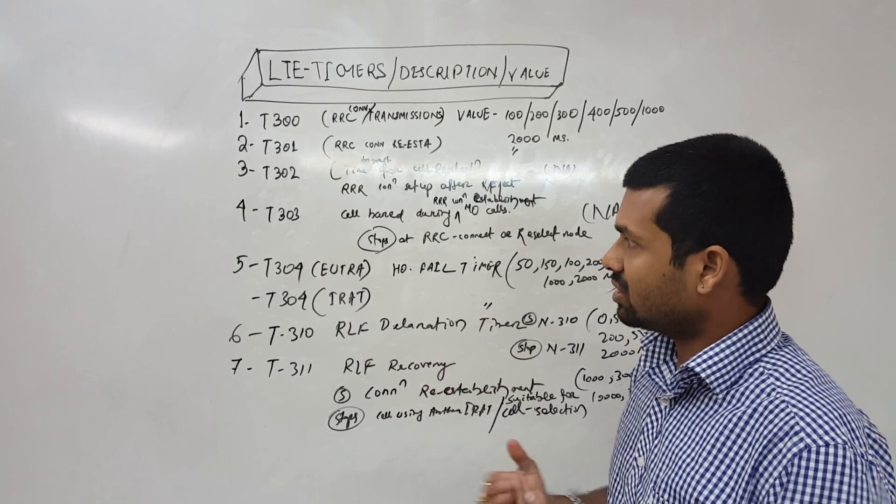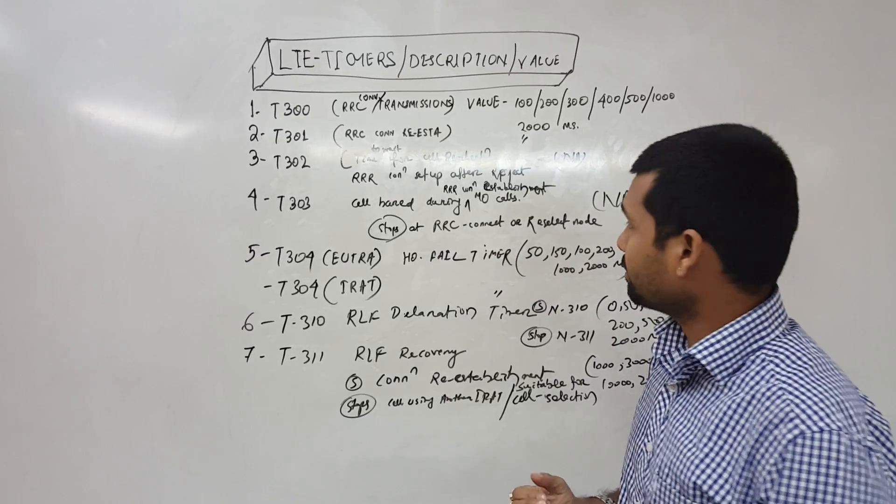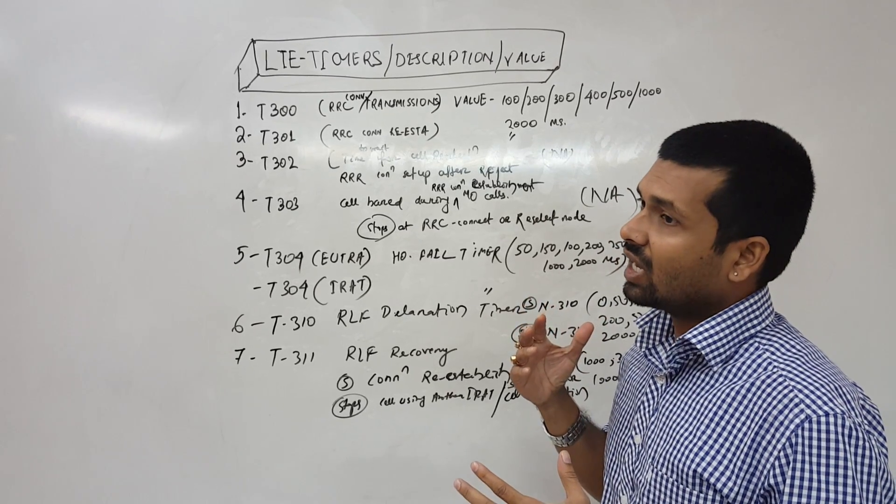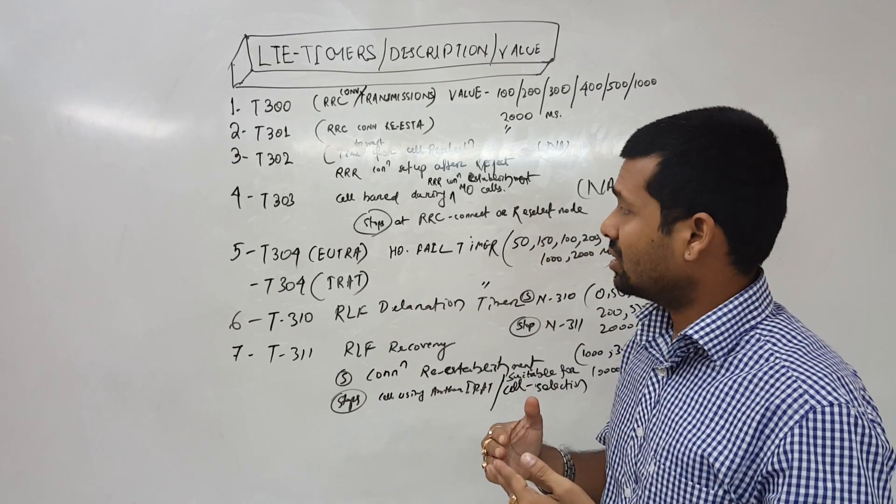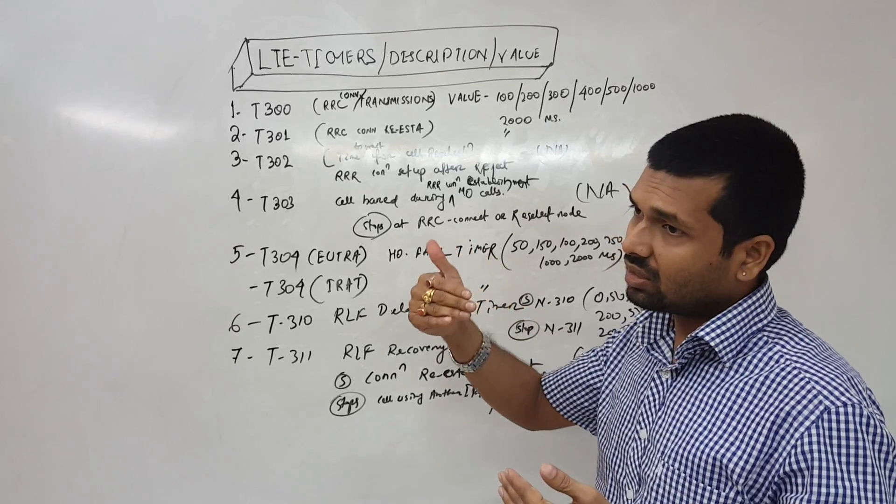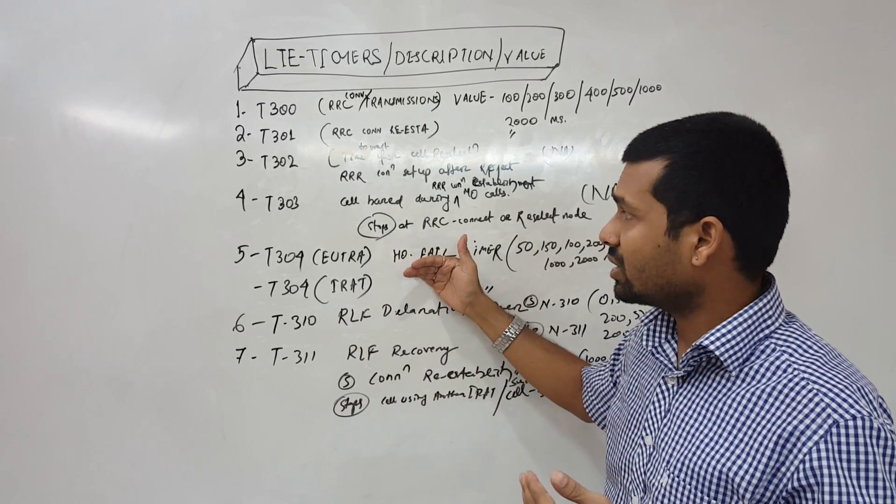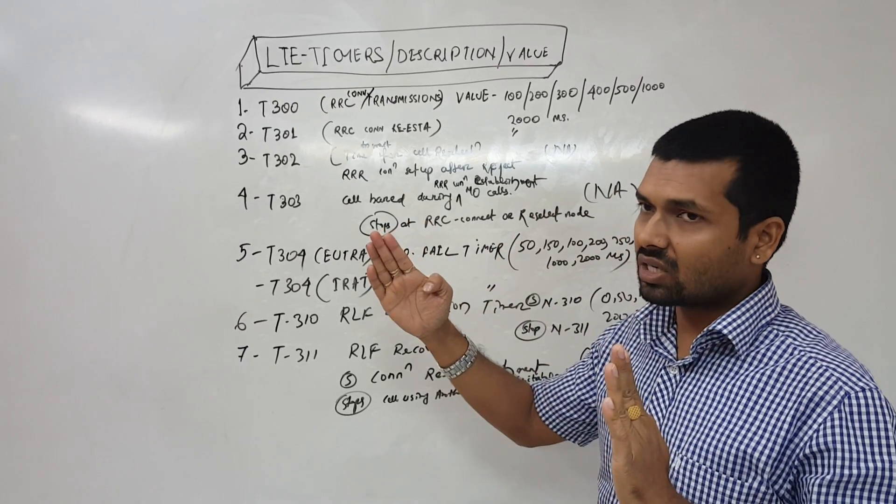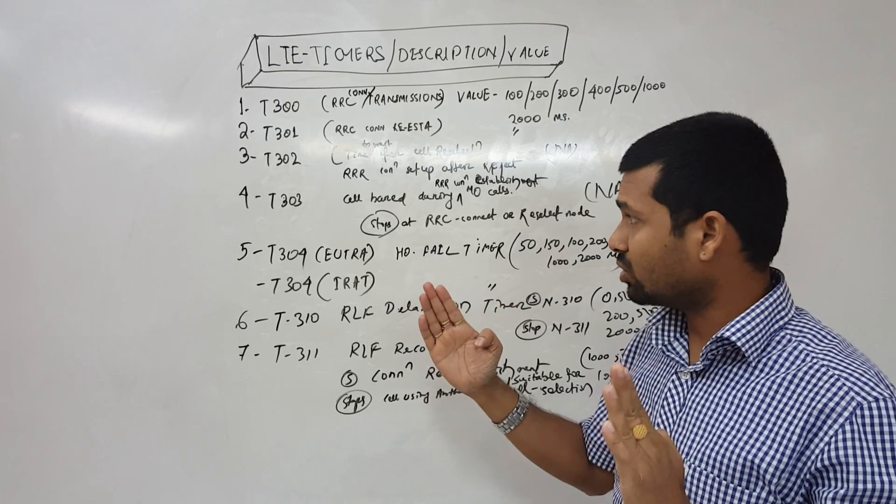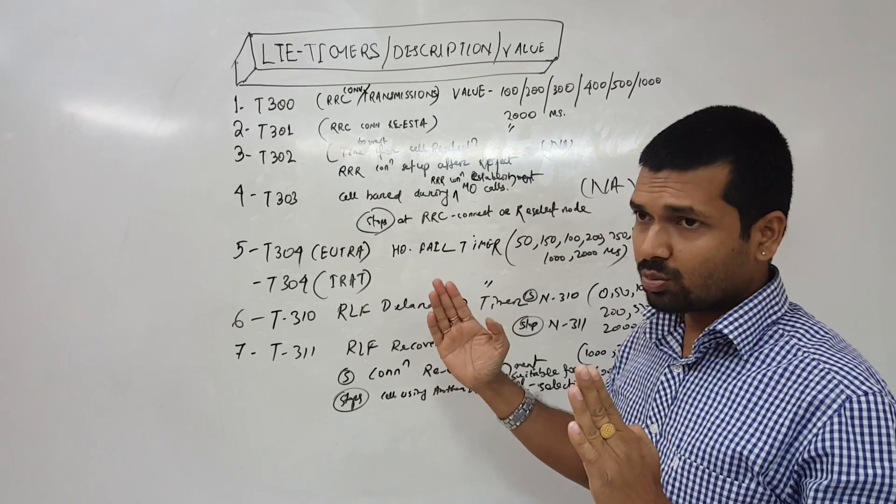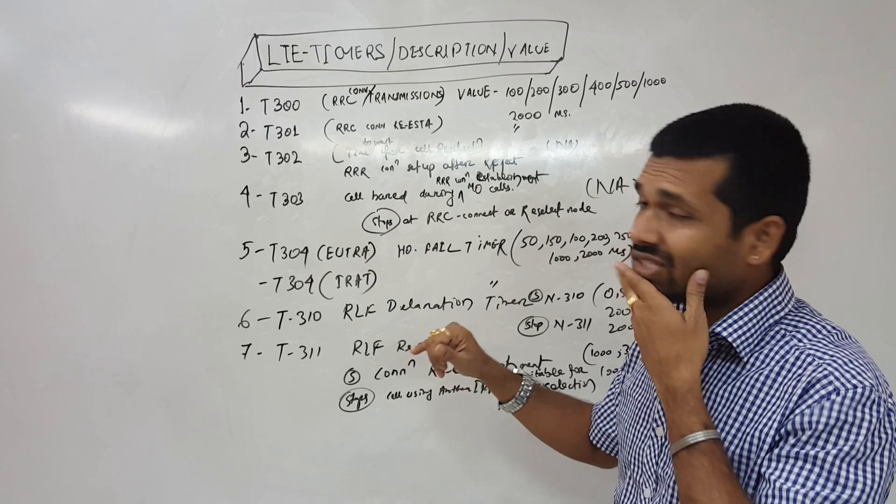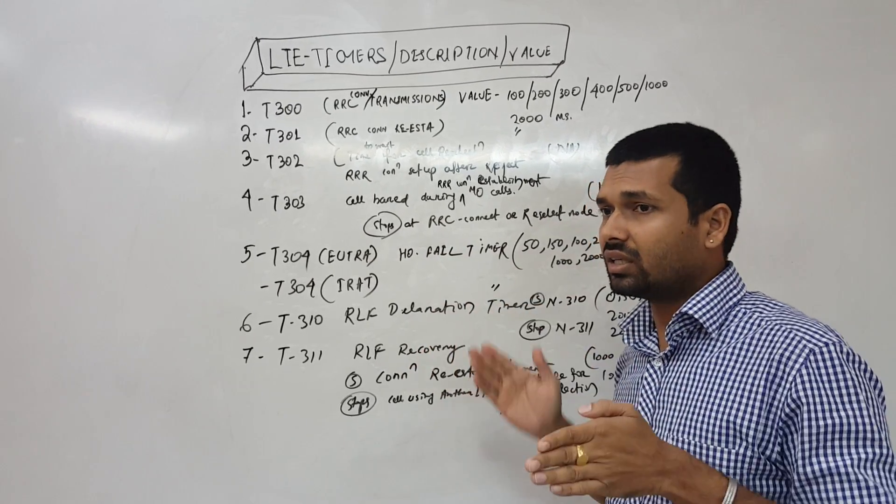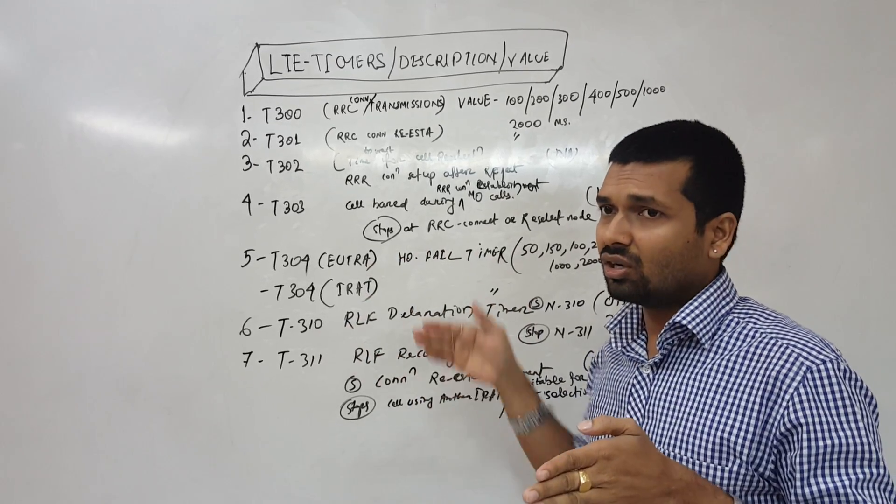Then T304. It is the handover fail timer. When the RRC connection reconfiguration starts and when successfully it is done to another cell. We monitor the start of RRC reconfiguration and completion of RRC reconfiguration successfully. If it is not successful, if it is failing, this monitor will catch it. So it starts from RRC reconfiguration till the reconfiguration happens or not.